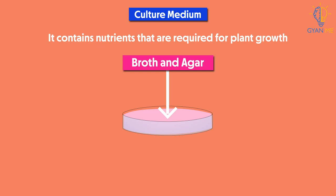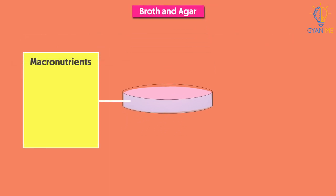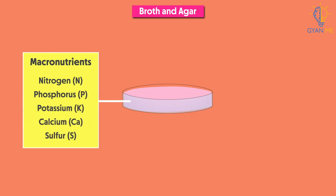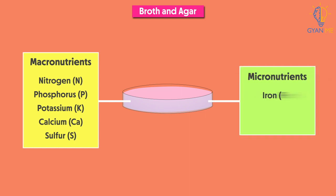The nutrient medium is made up of macronutrients like nitrogen, phosphorus, potassium, calcium, and sulfur, which are required for proper growth and organ formation in the tissue. This medium also contains micronutrients like iron, manganese, and zinc, which are required in small amounts but are crucial for the growth of tissues.